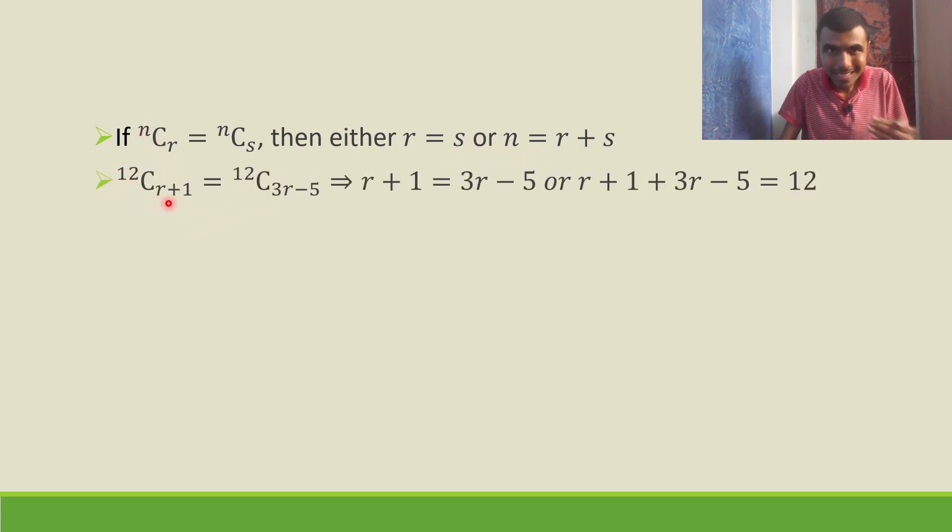So 12Cr+1 = 12C3r-5, so either r+1 = 3r-5, or r+1 + 3r-5 = 12, or 12 = r+1 + 3r-5.